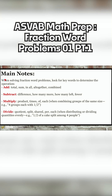So remember everybody, when you're solving fraction word problems, we got to look for those keywords to determine what operation we're going to be dealing with. When we think about words like the total, the sum, in all or altogether, or anything that indicates combining everything, we know that that's going to be addition. Bringing it all together, that absolutely will be addition.